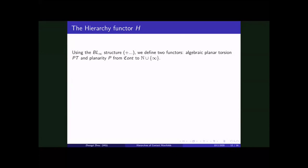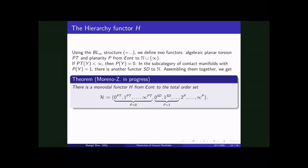And when the planar torsion is smaller than infinity, the planarity P(Y) will be 0. And in the next case, when P(Y) is 1, there's another functor called semi-dilation. It's evaluated into integers. And the main theorem is the following that there is a monoidal functor H, we call it hierarchy functor from contact cobordism category to the total order set like this. So first you have this planarity 0, but you have PTs from 0, 1 to infinity. Then you have planarity 1 and the order of semi-dilation is from 0 to 1. And then you have planarity where it be 2, 3 to infinity.